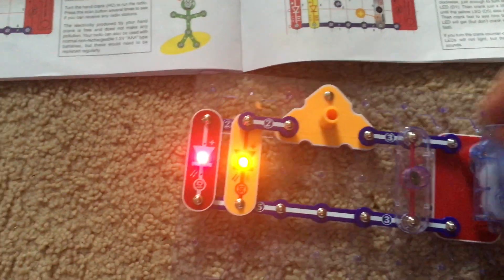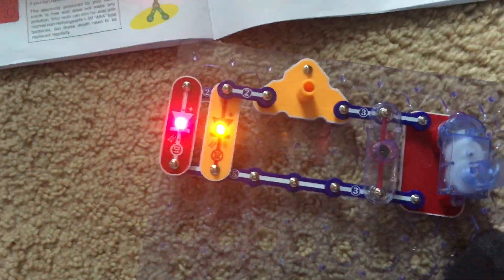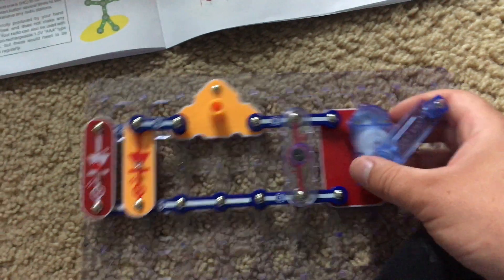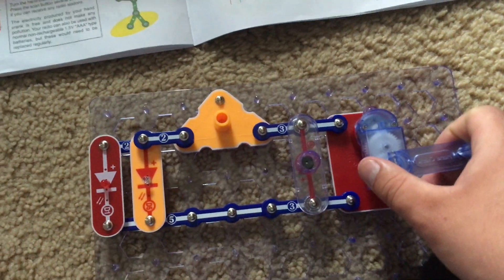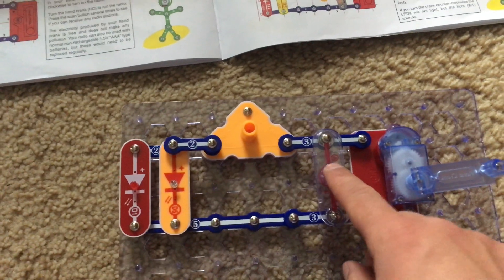Then turn it fast and see how bright each of the two LEDs get. Now if you turn the hand crank counterclockwise, the horn will sound only, but the LEDs will not light.